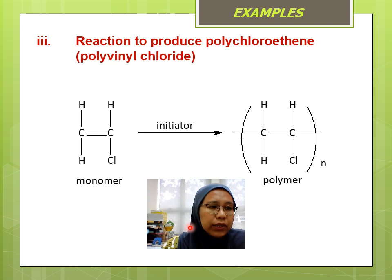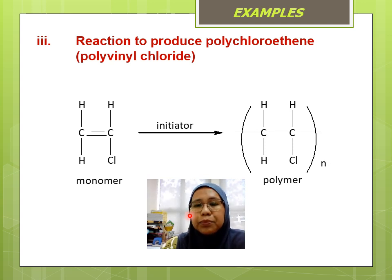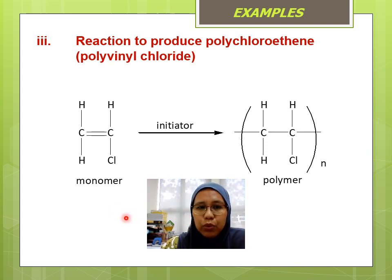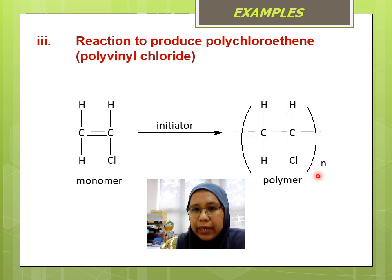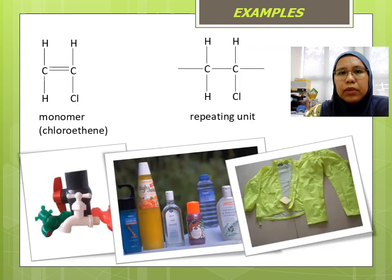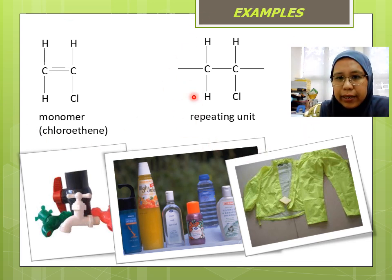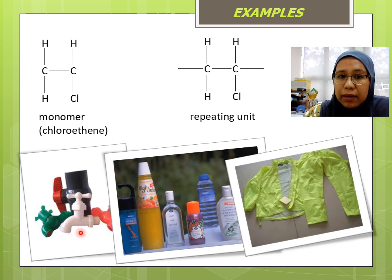The third reaction produces polyvinyl chloride, or polychloroethene. You have already written all of this in Chapter 4, so this is a revision. The monomer is chloroethene. We remove the double bond and add two covalent bonds before and after, with a bracket and N, to make up the polymer. The monomer is chloroethene together with its repeating unit. Examples of PVC products include piping systems, bottle containers, and raincoats.